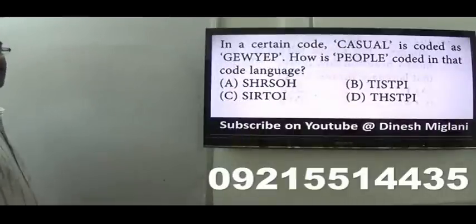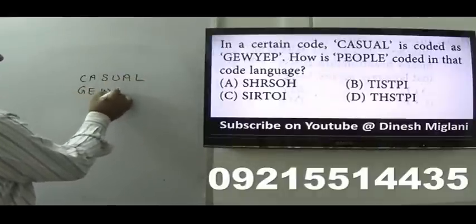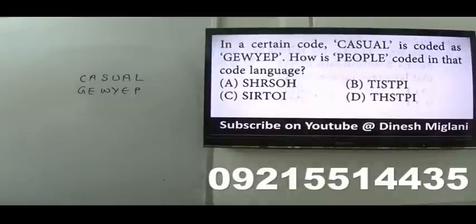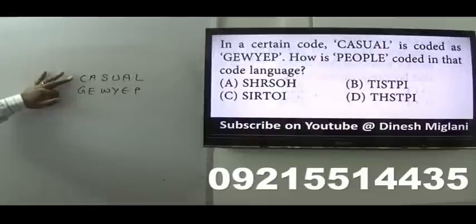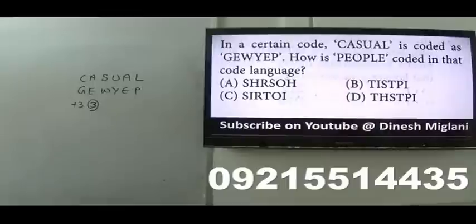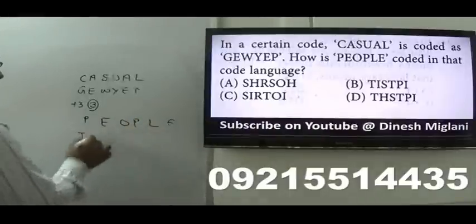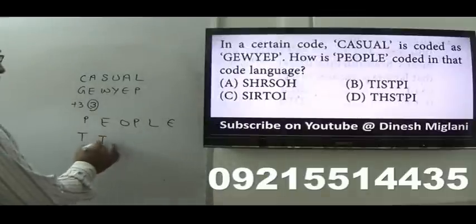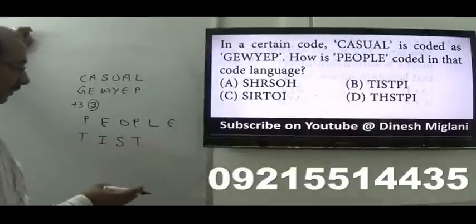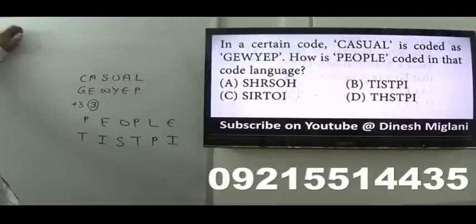Next question: 'casual' is coded as G-E-W-Y-E-P. Let us write casual — C-A-S-U-A-L — coded as G-E-W-Y-E-P. First, find the pattern. C→G: D-E-F-G, 3 increased. A→E: 3 increased. S→W: 3 increased. U→Y: 3 increased. A→E: 3 increased. L→P: 3 increased. So everywhere 3 has been added. The word is 'people' — P-E-O-P-L-E. P+3=S... applying the pattern: P→S, E→H... the answer should be T-I-S-T-P-I. Hence, B is my answer — people is coded as T-I-S-T-P-I.